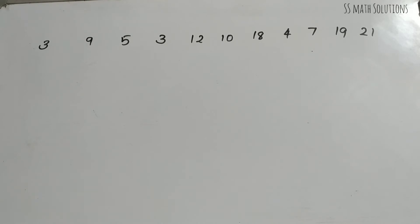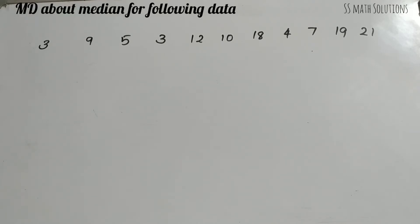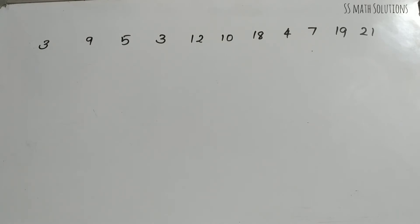Now our next question: find the mean deviation about the median for the following data. When you get a question about the median, you need to arrange the values in ascending order — from small to big — before finding the median.